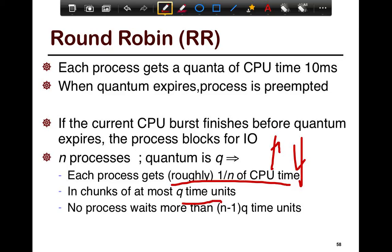And, essentially, with round-robin, you guarantee that no process waits for more than N minus 1 Q time units, times Q time units. The reason is that if you, at the time that your job arrives at the queue, you have another task, N minus 1 of the tasks waiting in front of you,